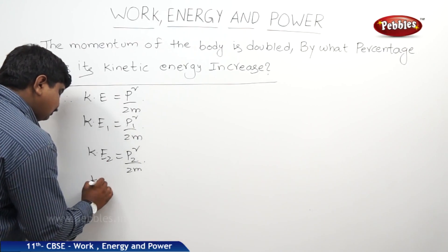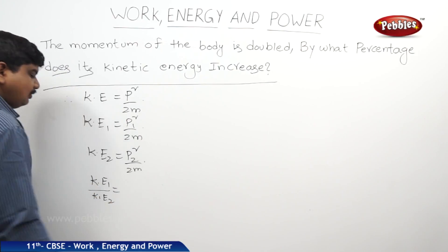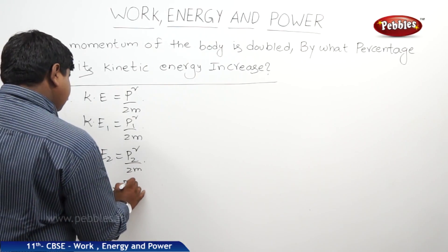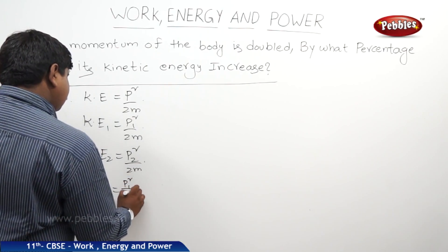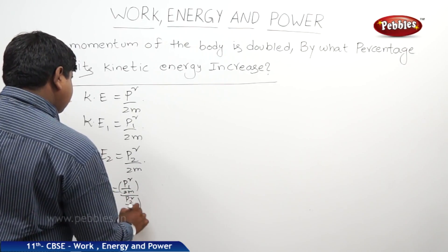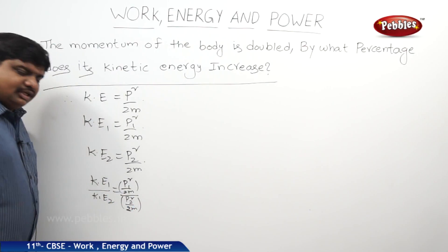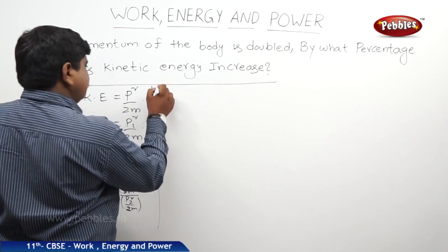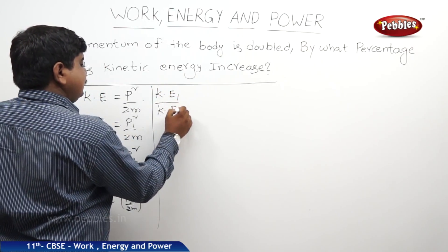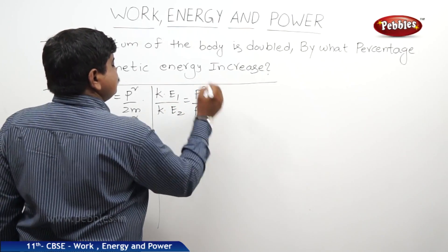So KE1 by KE2 is equal to P1 squared by 2m divided by P2 squared by 2m. The 2m terms cancel, so we get KE1 by KE2 is equal to P1 squared by P2 squared.